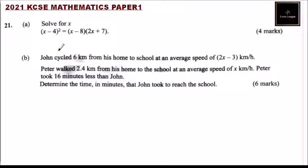Question number 21, part A — solve for x. We are given: (x minus 4) squared equals (x minus 8)(2x plus 7).